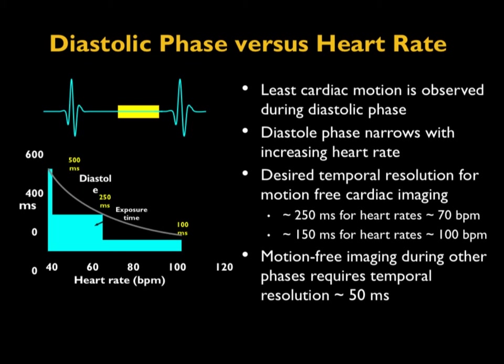For example, at 60 beats per minute, the space between one systolic peak and the next is 1000 milliseconds — an ideal situation for imaging the diastolic phase. The desired temporal resolution for motion-free cardiac imaging is at least 250 milliseconds for heart rates greater than 70 beats per minute, or 150 milliseconds for heart rates greater than 100 beats per minute. Ideally, motion-free imaging requires nearly 50 milliseconds temporal resolution.